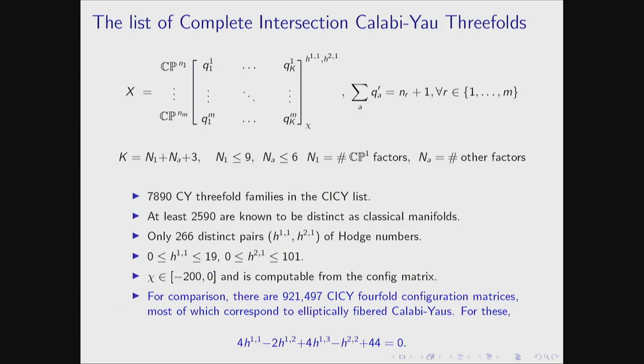For this to represent a Calabi-Yau manifold, you can't just write any matrix of integers and expect a Calabi-Yau manifold. If you impose a couple of conditions — specifically that the first Chern class is zero, and a relationship between the number of polynomials and the number of projective factors for a threefold — you are guaranteed to end up with a Calabi-Yau threefold or fourfold. In total, there are roughly 8,000 CICY configuration matrices in the list.